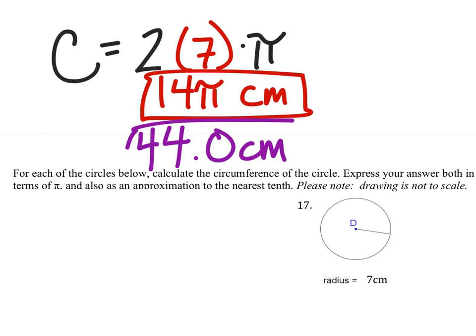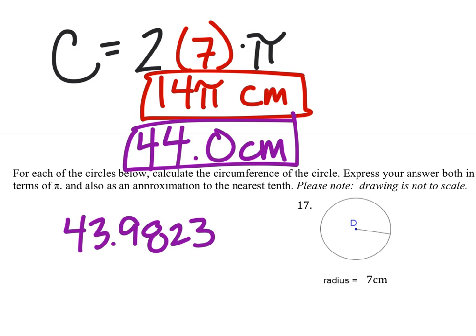Now the reason this is 44 is because the original answer is 43.9823, about. And since we're rounding to the tenths position, the 8 here is 5 or bigger, so we round this 9 up 1. Which would pretty much make it a 10 there, so it becomes a 44.0, which we have.